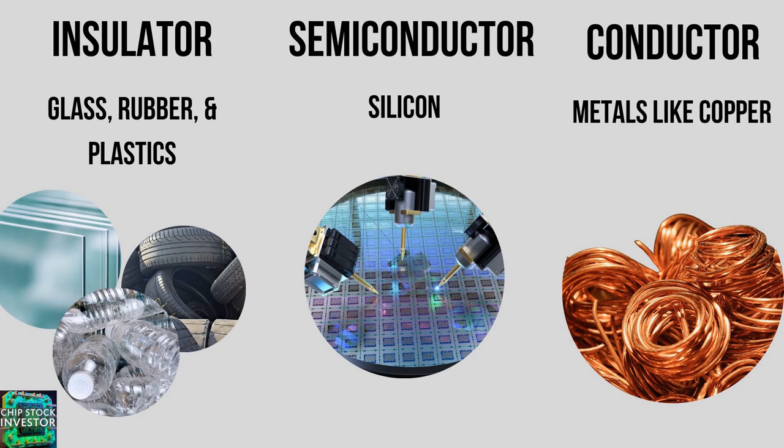Semiconductors, which we obviously talk a lot about here on Chipstock Investor, is a material that allows for the flow of electricity under certain situations. So silicon — our favorite element here at Chipstock Investor — which conducts electricity when doped with other elements and under the right voltage, aka the right amount of push, gets those electrons moving. And then there are conductors, which have loosely held electrons and thus allow for the easy flow of electricity, so most metals like copper are conductors.